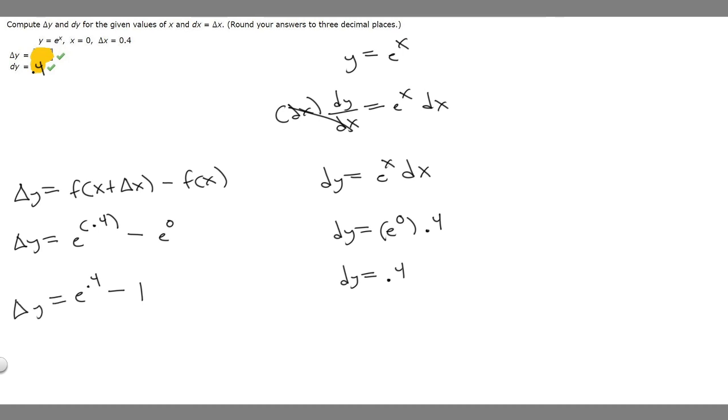So delta y equals this. So e to the 0.4 is going to be equal to 1.4918 and so on minus 1. So when you solve it, you should get 0.491824 and so on. It says round to three decimal places. So if we round, it's going to be 0.49.